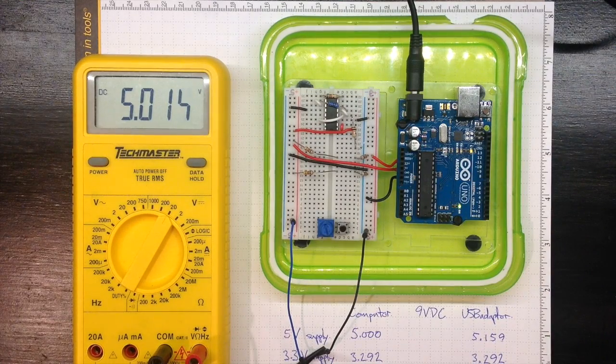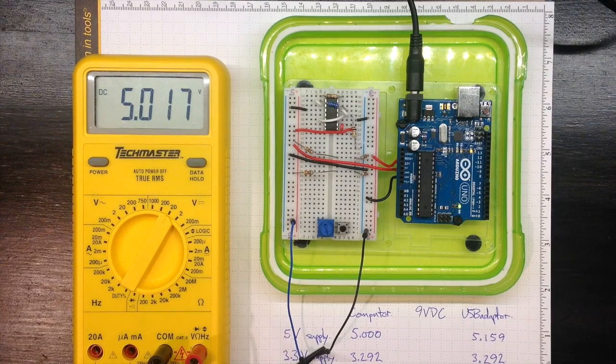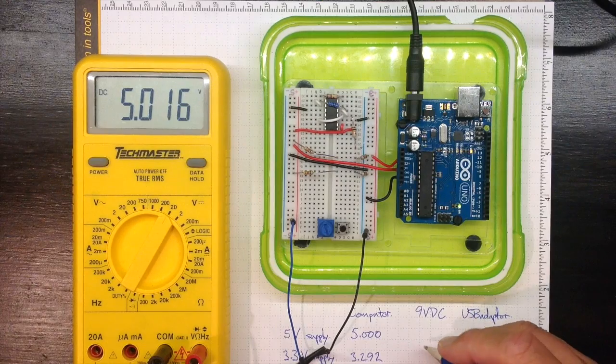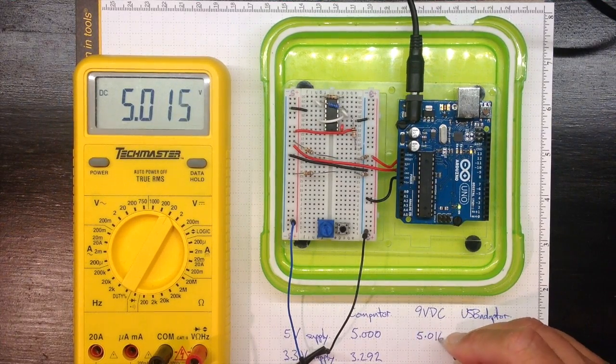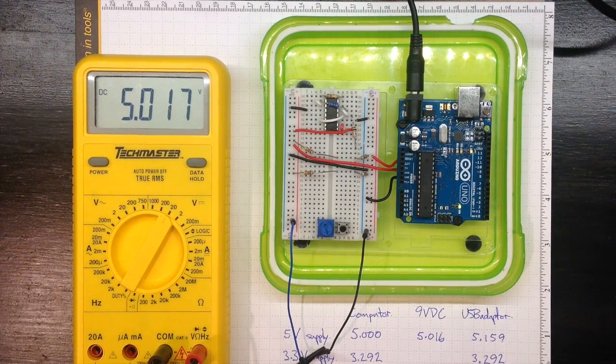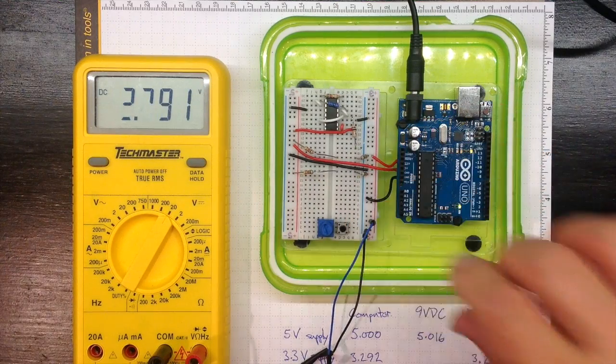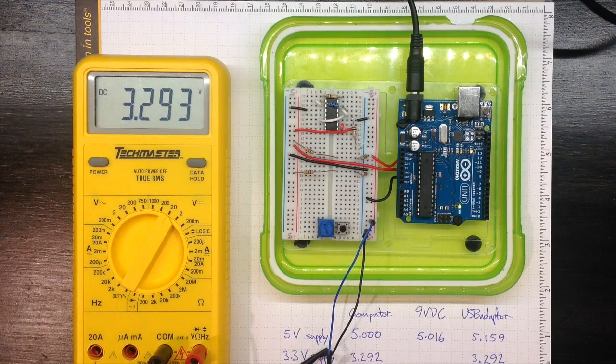And I get a little bit more than 5 volts. 5.015 or 5.016. And if I now switch over to the 3 volt supply, I get 3.292.